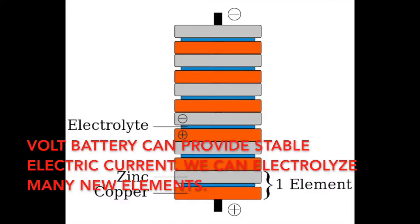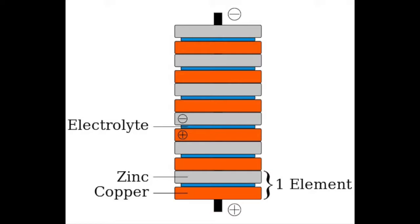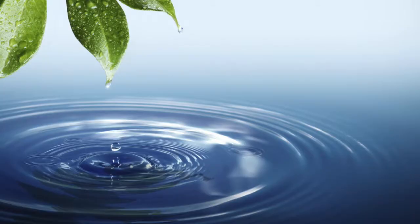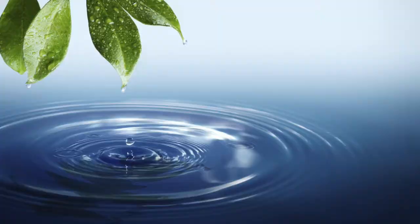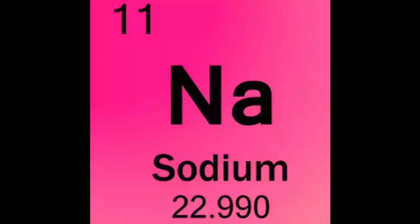Volta's battery can provide stable electric current. We can electrolyze many new elements. In 1800, William Nicholson decomposed water into hydrogen and oxygen.